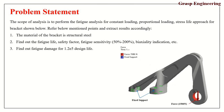This slide represents the problem statement. We need to perform fatigue analysis for a constant loading, proportional loading, and stress life approach for a bracket used in aircraft. A force of 1500 newton is acting downward, and the bracket is fixed on the highlighted green surfaces in all degrees of freedom. The material is structural steel, and we need to find fatigue life, safety factor, sensitivity, biaxiality indication, and fatigue damage for a design life of 1.2e5 cycles.